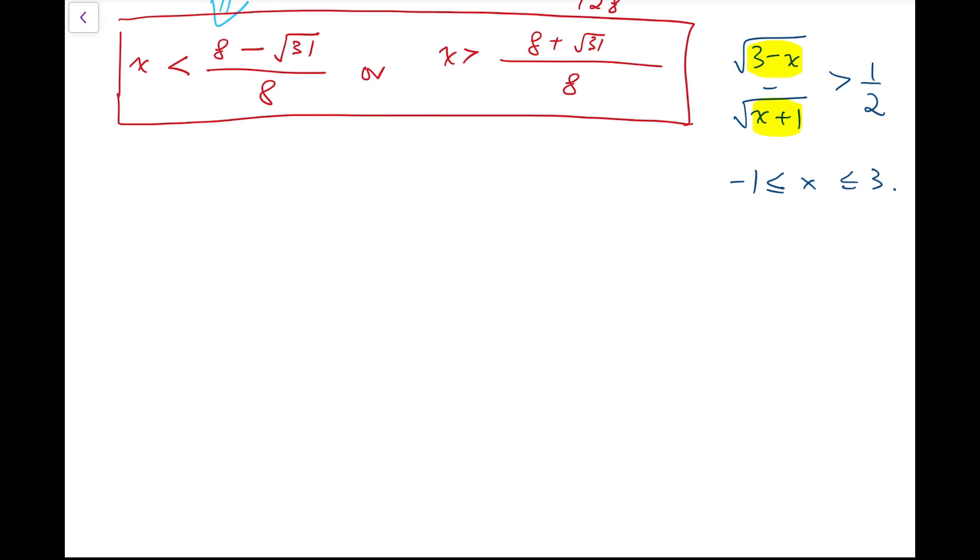So it's going to affect our solution a bit. For the lower limit, minus 1, it's going to be applied here, which means x is not simply smaller than that expression, 8 minus root of 31 over 8, but it has to be greater than minus 1 at the same time. Furthermore, the upper limit of x is going to affect the other inequality, which is that x is not simply greater than that number, 8 plus root of 31 over 8, but it has to be at most 3 at the same time.